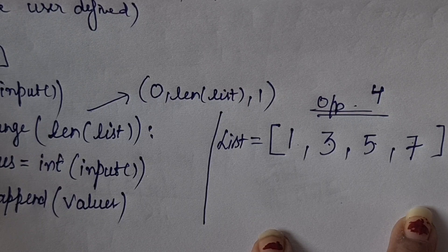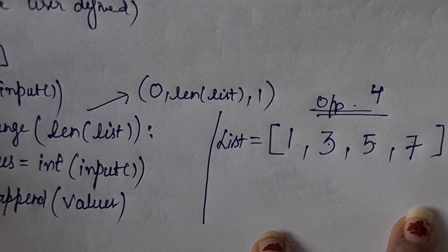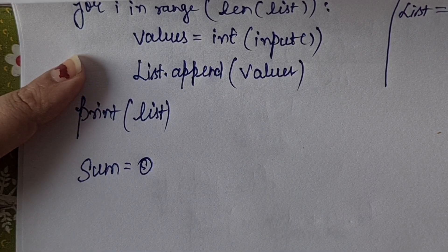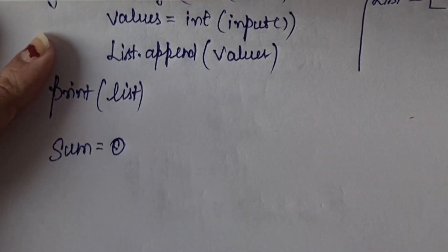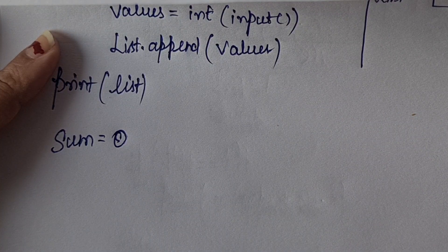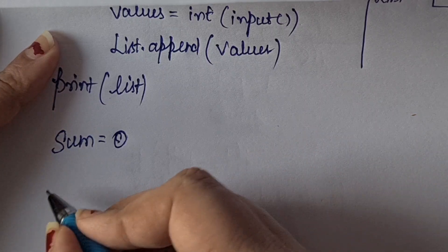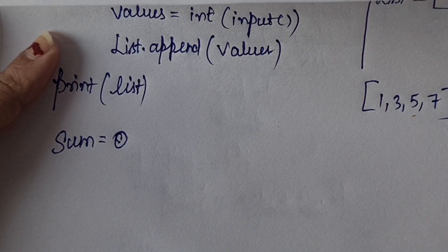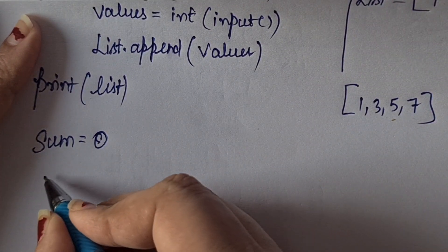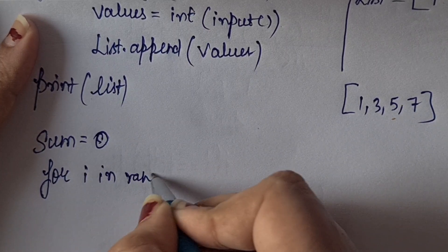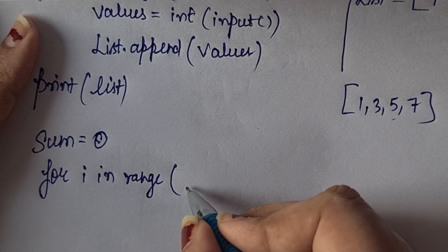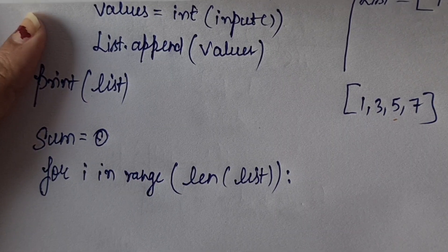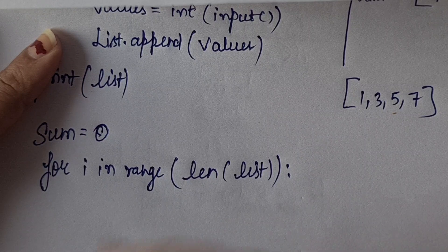Now what do I have to do? Find the sum. For sum, obviously I have to initialize sum equals 0. Now what do I have to do? For example, my list is 1, 3, 5, 7. I have to find the sum, so I will use for i in range. Now I can write i again because it is a local variable.